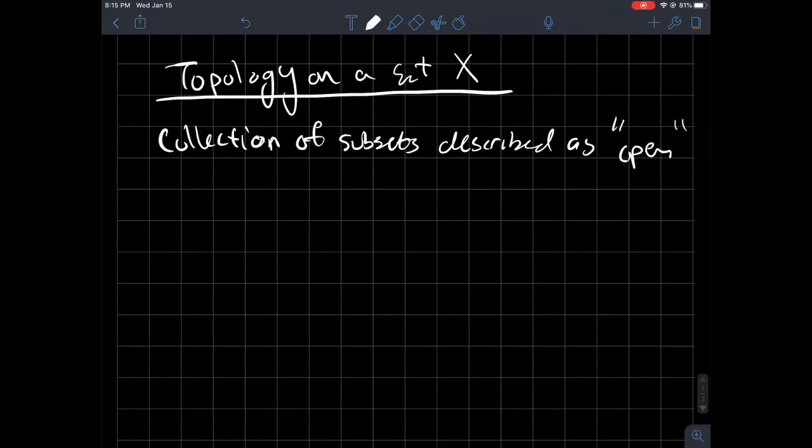I'll put open in quotes here because open is a really vague thing. So what does this open mean here? So there are three rules on what it means for sets to be open. And so the three rules are, i.e. our collection satisfies these three rules.